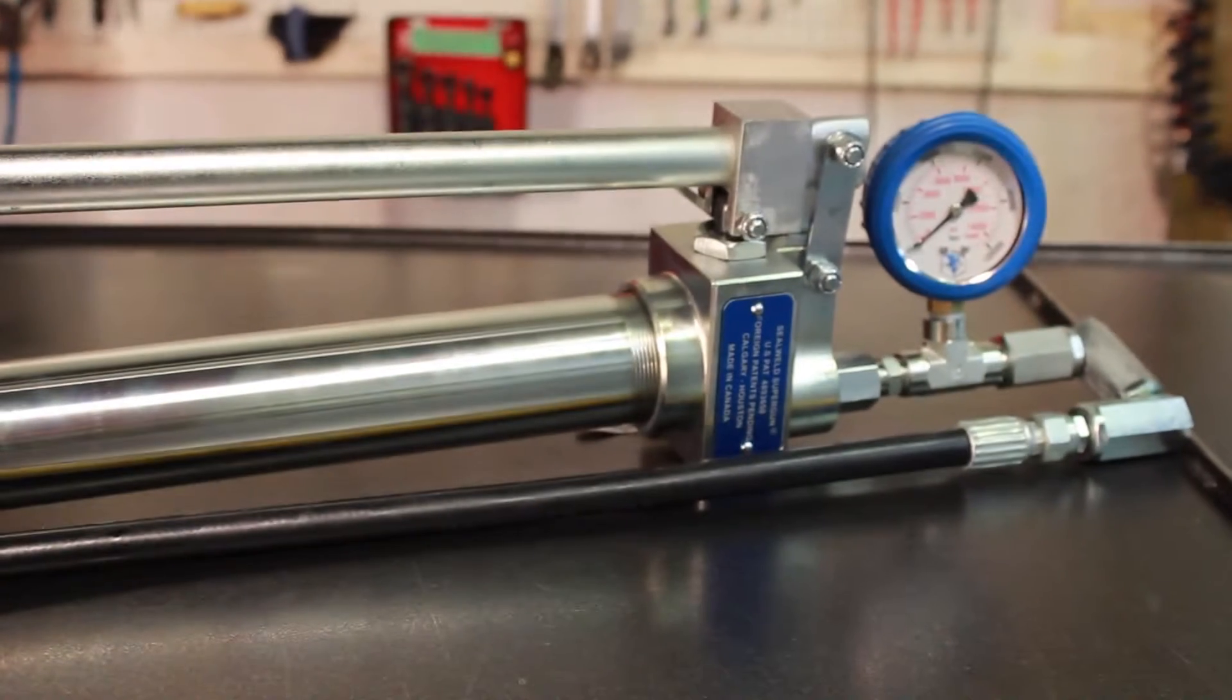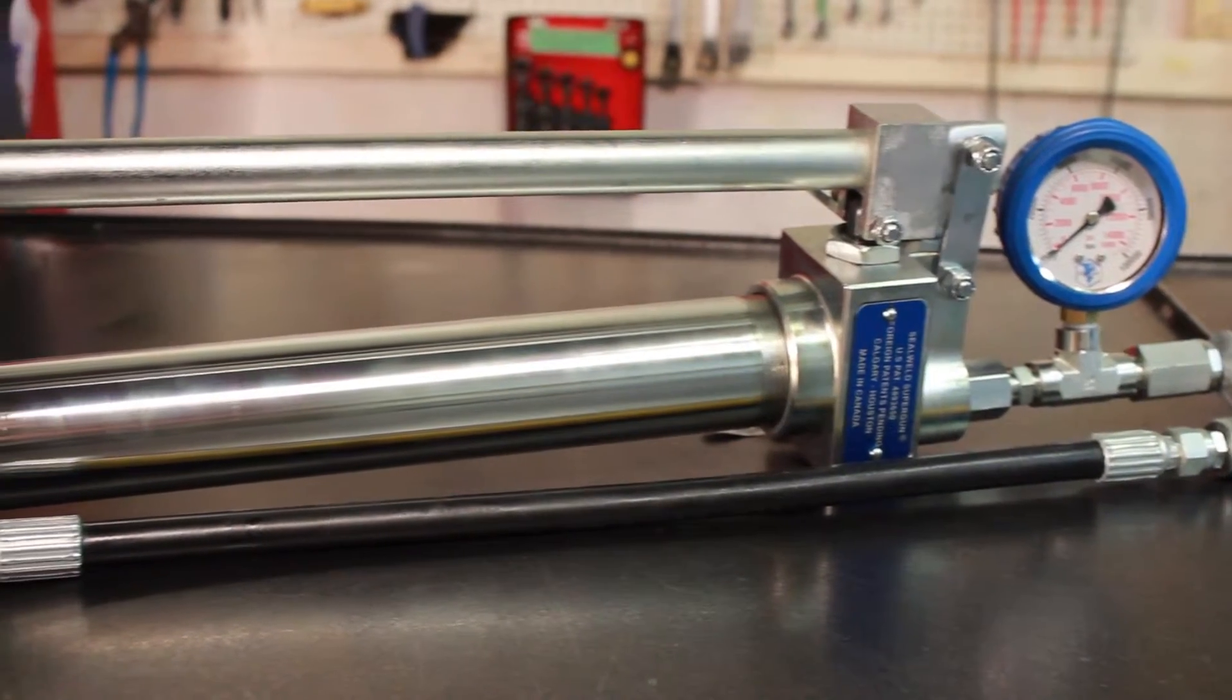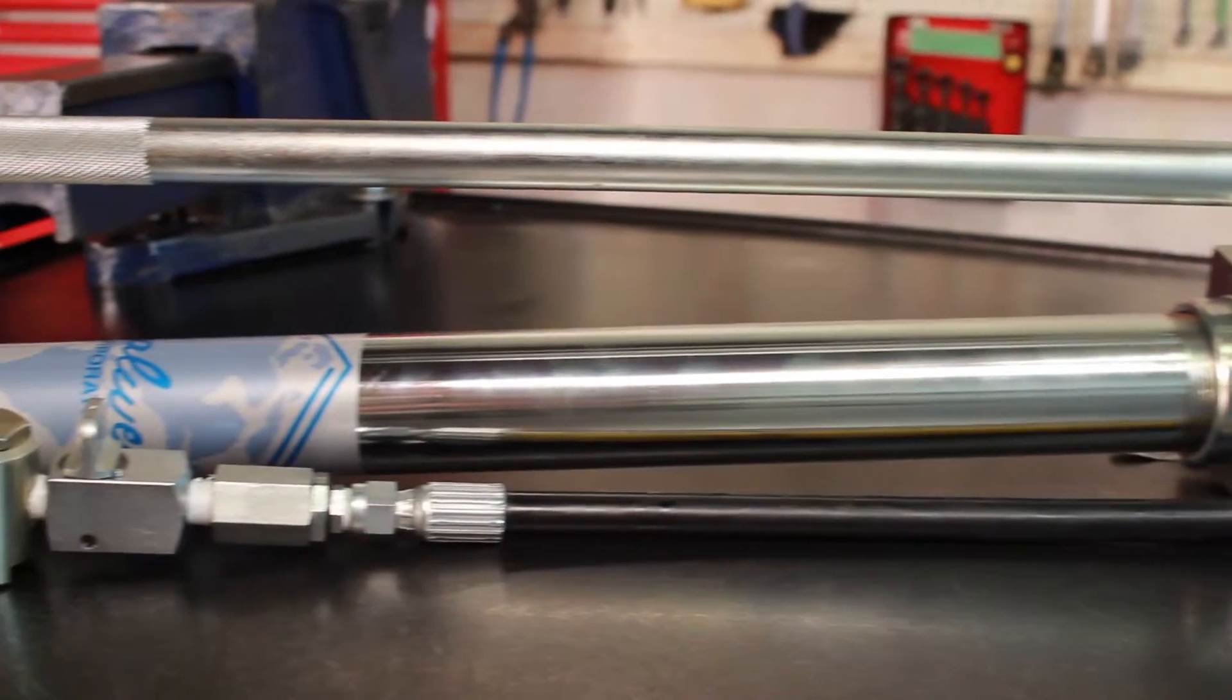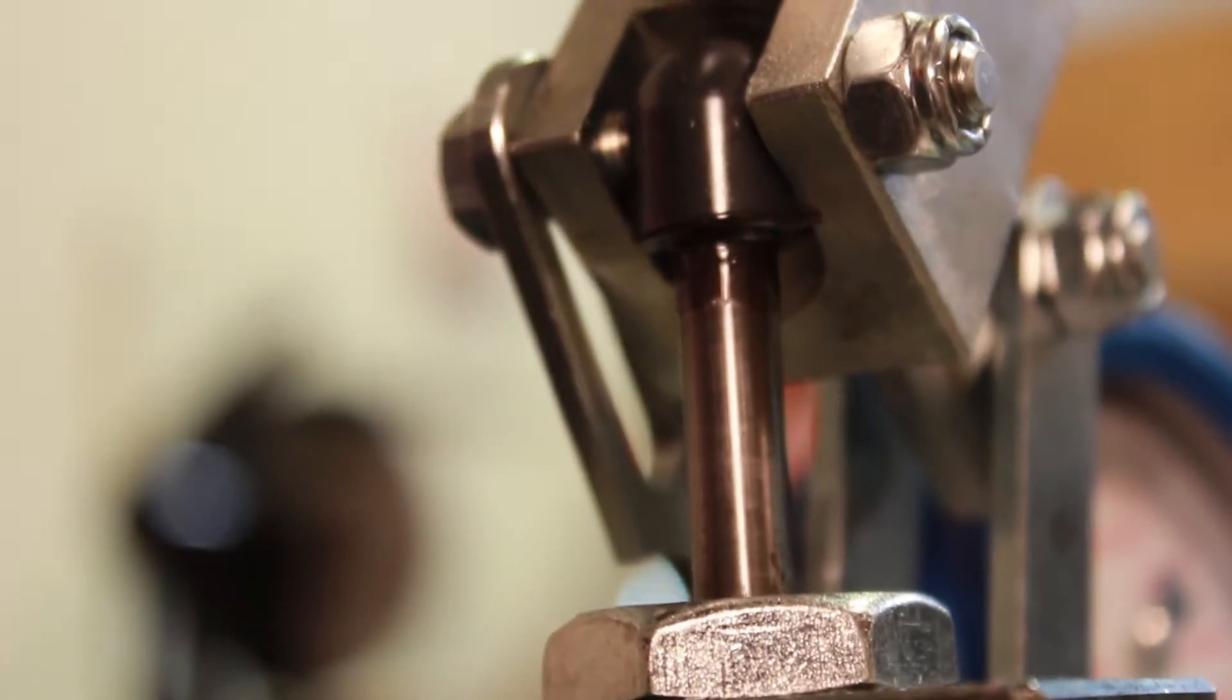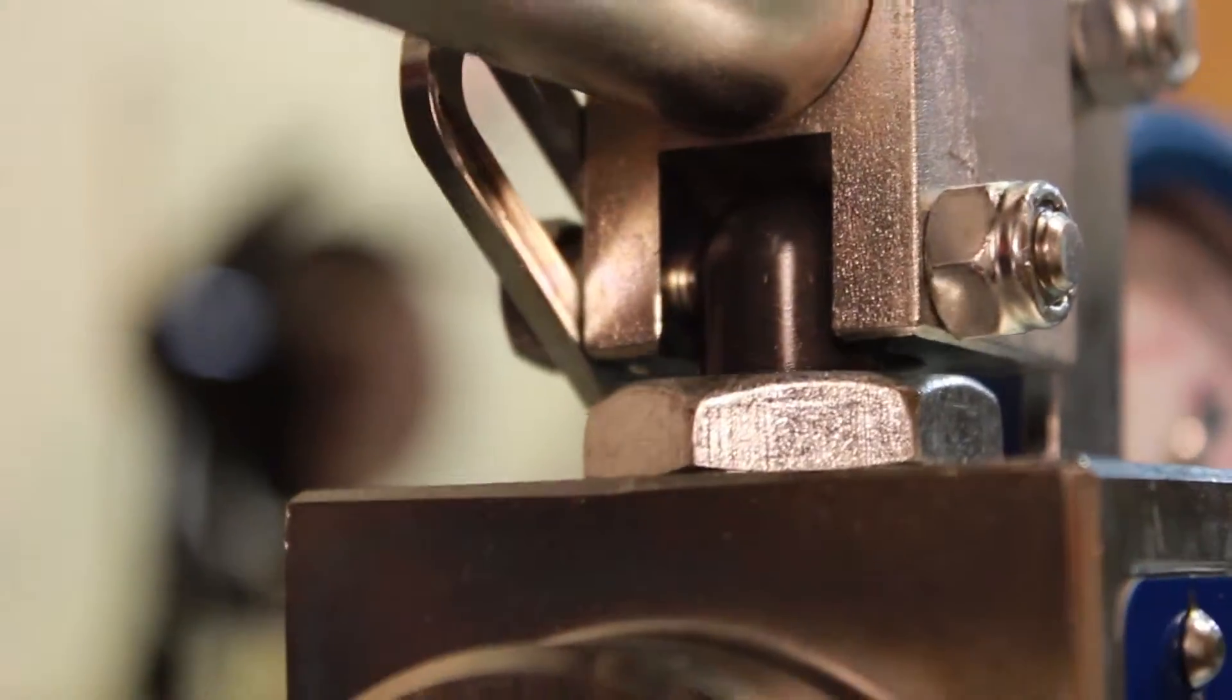The Seal Weld Supergun is an extremely durable and versatile hand-operated sealant injection pump. The piston barrel has a 16 fluid ounce capacity and is compatible with a wide range of valve care products in bags, sticks, and cartridges.